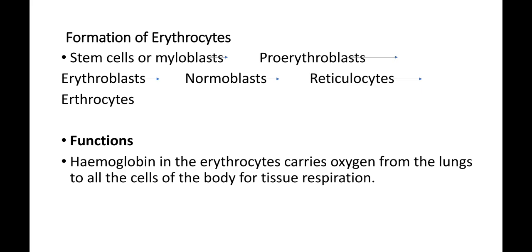Erythrocytes ka nirman hamare bone marrow mein payi jaane wali stem cells ya myeloblast mein hota hai. Myeloblast ke andar abundant cytoplasm hota hai aur nucleus undifferentiated hota hai. Myeloblast convert hoti hai pro-erythroblast mein, jo myeloblast se badi hoti hai. Pro-erythroblast convert hoti hai erythroblast mein, jahan yeh hemoglobin acquire kar leti hai. Erythroblast banati hai normoblast, jiske andar nucleus gayab ho jaata hai. Agli stage aati hai reticulocyte, jo ki immature erythrocyte hai aur jo convert ho jaata hai mature erythrocyte mein.